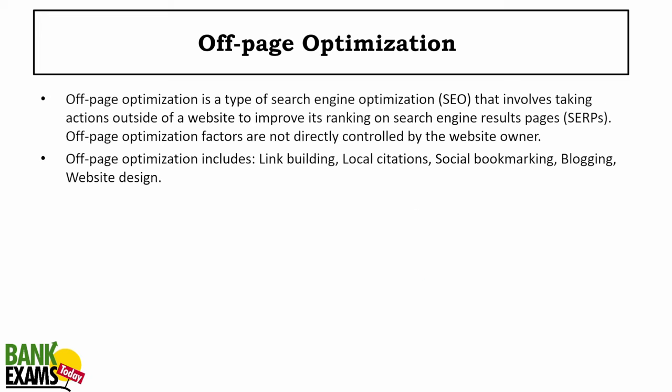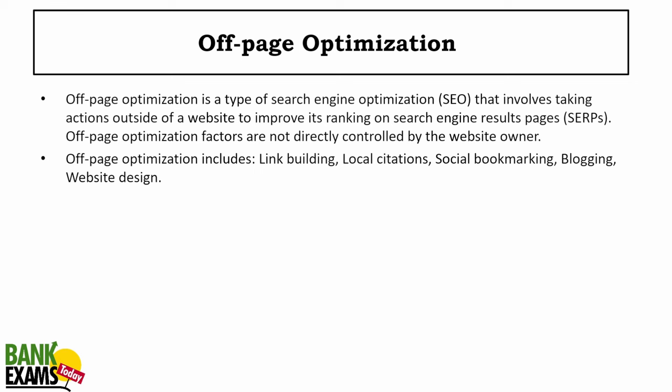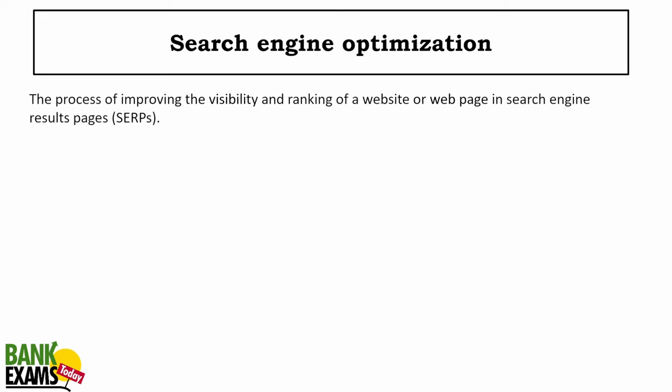On-page optimization means making changes on your website itself — making it fast, reliable, and informative. Off-page optimization means you are not making changes on your website but getting links from a local newspaper, doing citations, social bookmarking, or having a blogger discuss you. Off-page optimization helps you get more clicks from Google.